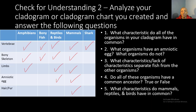Now let's see how you did on your second check for understanding. Number one: what characteristics do all the organisms in your cladogram have in common? If you notice on this cladogram chart, all the organisms have a vertebrae in common.